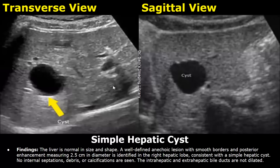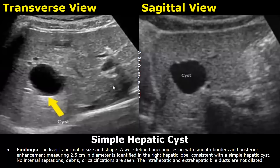These are the findings: the liver is normal in size and shape. A well-defined anechoic lesion with smooth borders and posterior enhancement measuring 2.5 centimeters in diameter is identified in the right hepatic lobe, consistent with a simple hepatic cyst. There are no internal septations, debris, or calcifications. The intrahepatic and extrahepatic bile ducts are not dilated.